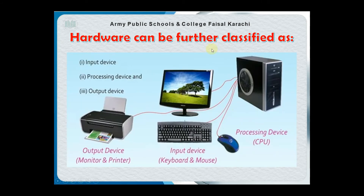Hardware can be further classified as: number one, input device; number two, processing device; and number three, output device. As you can see in the picture, these all parts are connected with a CPU, which is our processing device. Keyboard and mouse are the input devices. Monitor and printer are output devices. These are all hardware too.